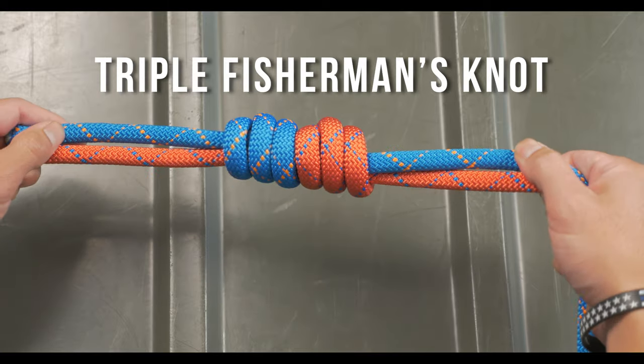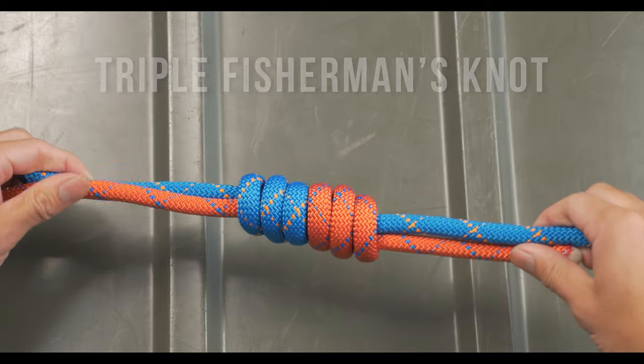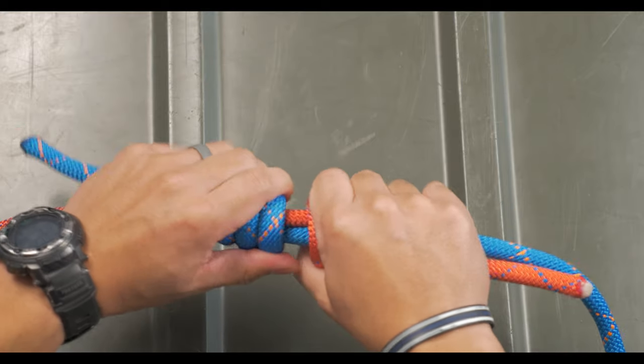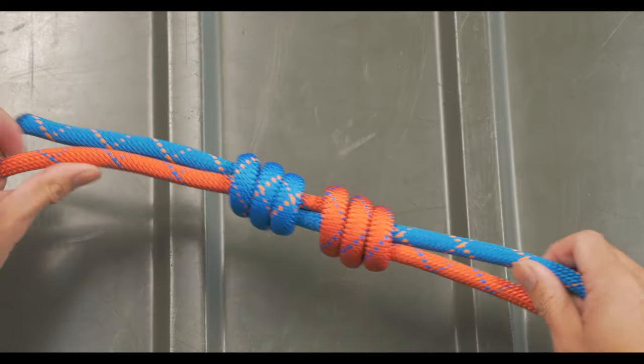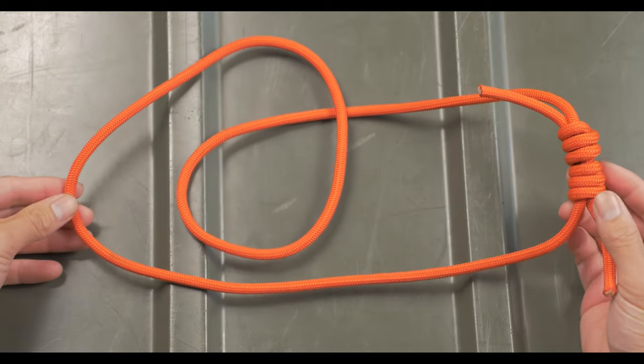The next knot is the triple fisherman's knot. This is great for absorbing shock and it uses the coils to absorb a lot of the energy. You could say it's more cushion for the cushion, and it's a reason why a lot of climbers use this knot to create loops.